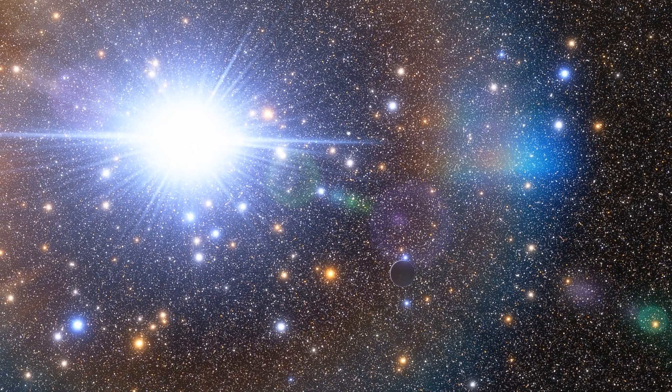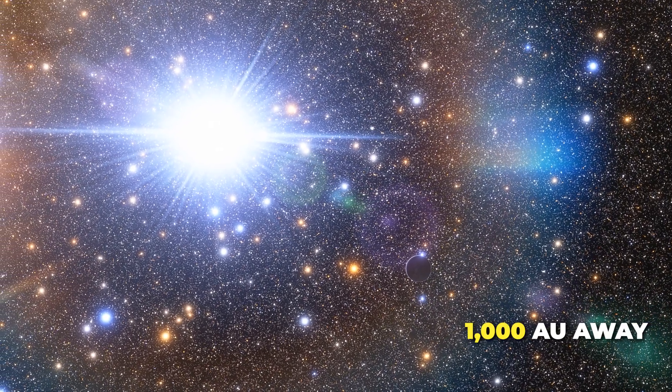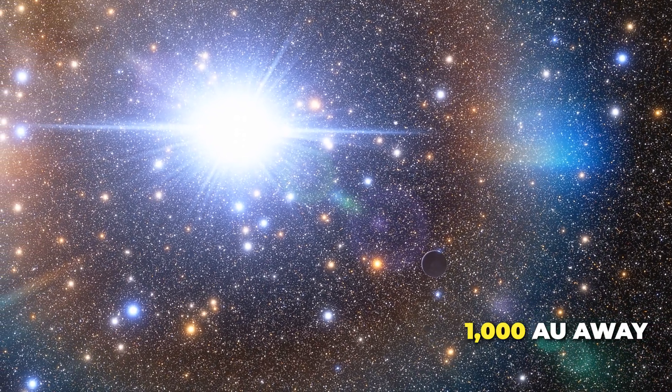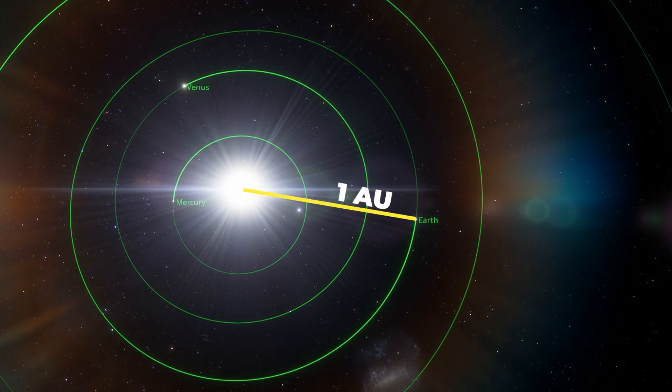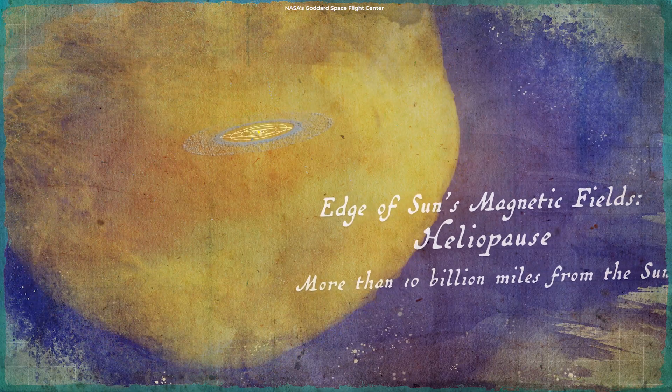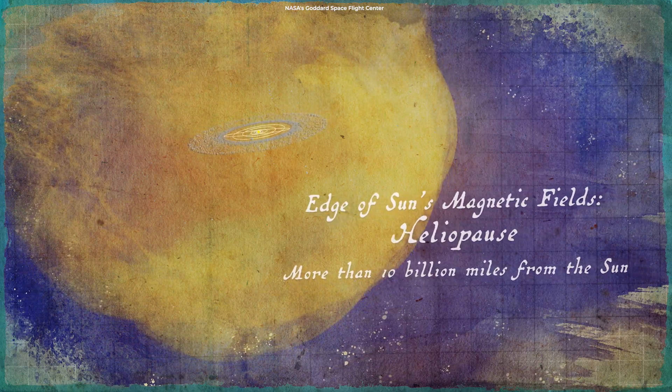In such a region, the nearest star to us would be about 1,000 astronomical units, or AU, away. One astronomical unit is the distance from Earth to the Sun. To note just how close 1,000 AU is...